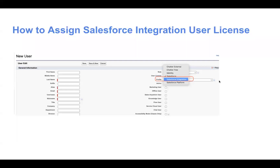How can you assign a Salesforce Integration User License? Using the regular user creation flow, go to Users from Setup and create a new user. Make sure that while assigning the user license, you choose the 'Salesforce Integration' value from the picklist, as this is the license type associated with the integration user license.